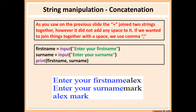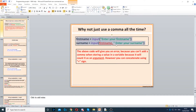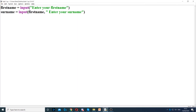You can also join two things together in Python using the comma. However, the comma will add a space to it as well. But why do we not always use commas? The reason is because you can't use commas inside variables. For example, here we're asking for first name and then we're asking for surname. What I did here is I put the first name, asked for first name, then used surname and put 'first name, enter your surname.'